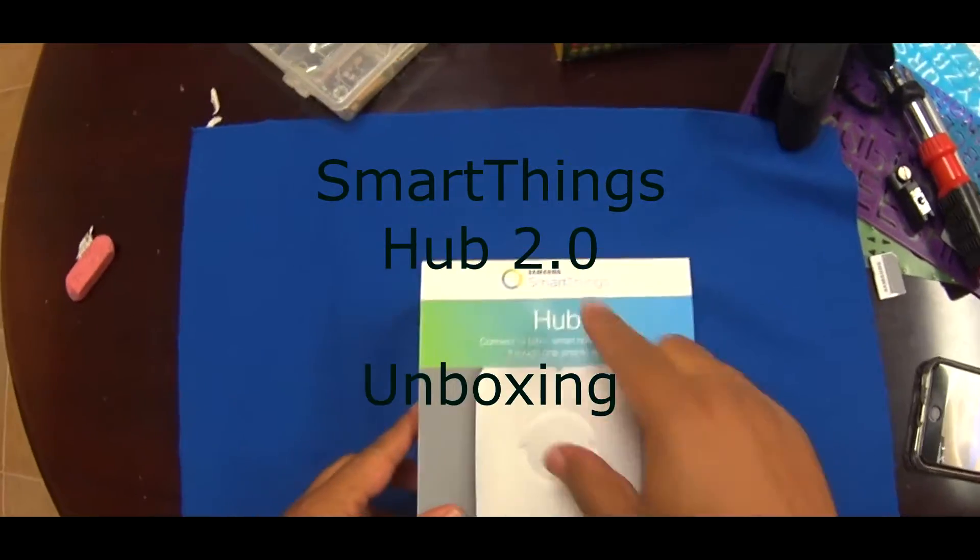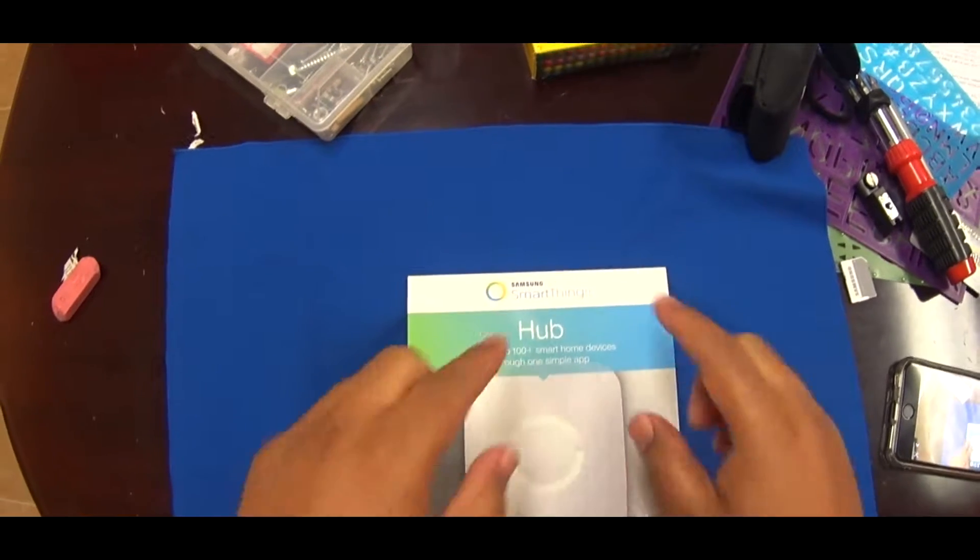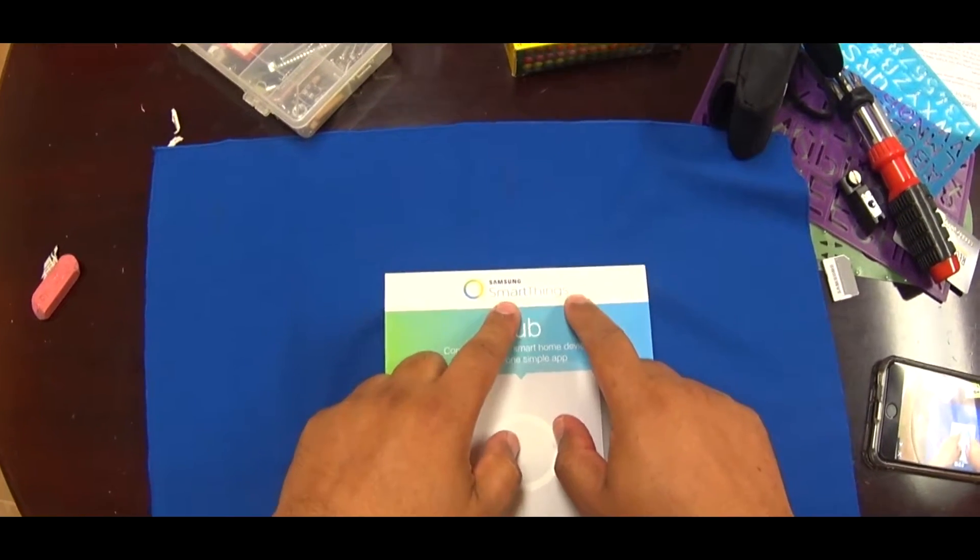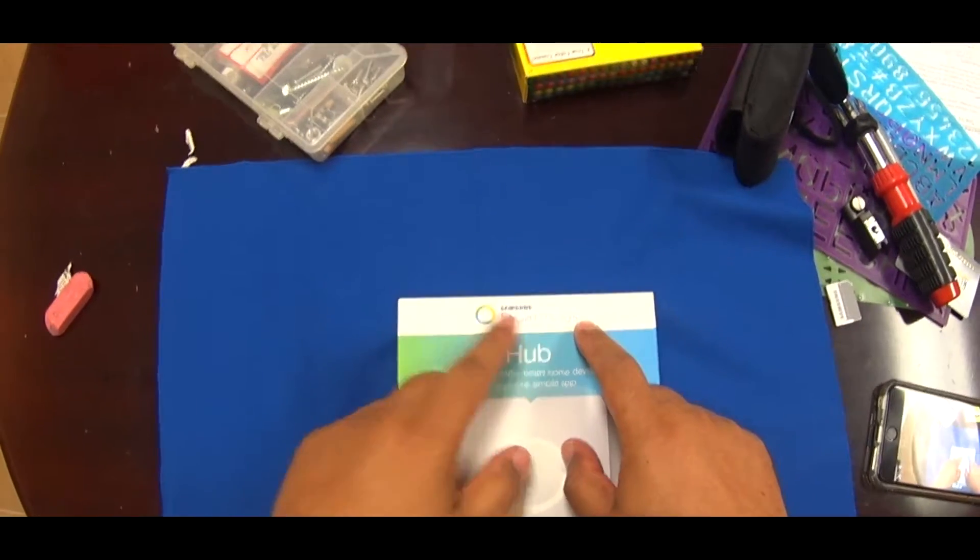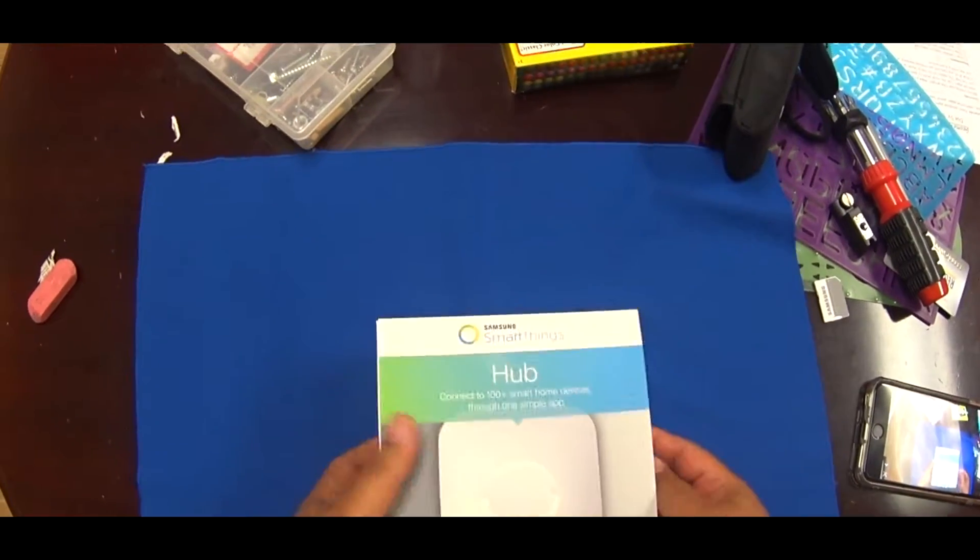All right, today we're going to do an unboxing of the SmartThings hub. This is version 2, which was originally came out by SmartThings. They were bought by Samsung, so version 2 has a Samsung name on it.